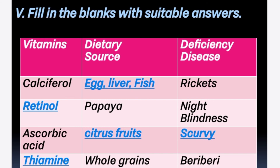3rd: Ascorbic acid is vitamin C. It is found in citrus fruits like lemon, orange, etc. Deficiency of ascorbic acid or vitamin C causes the disease scurvy. 4th: Thiamine is also known as vitamin B1. It is found in whole grains. Deficiency of vitamin B1 causes the disease beriberi.